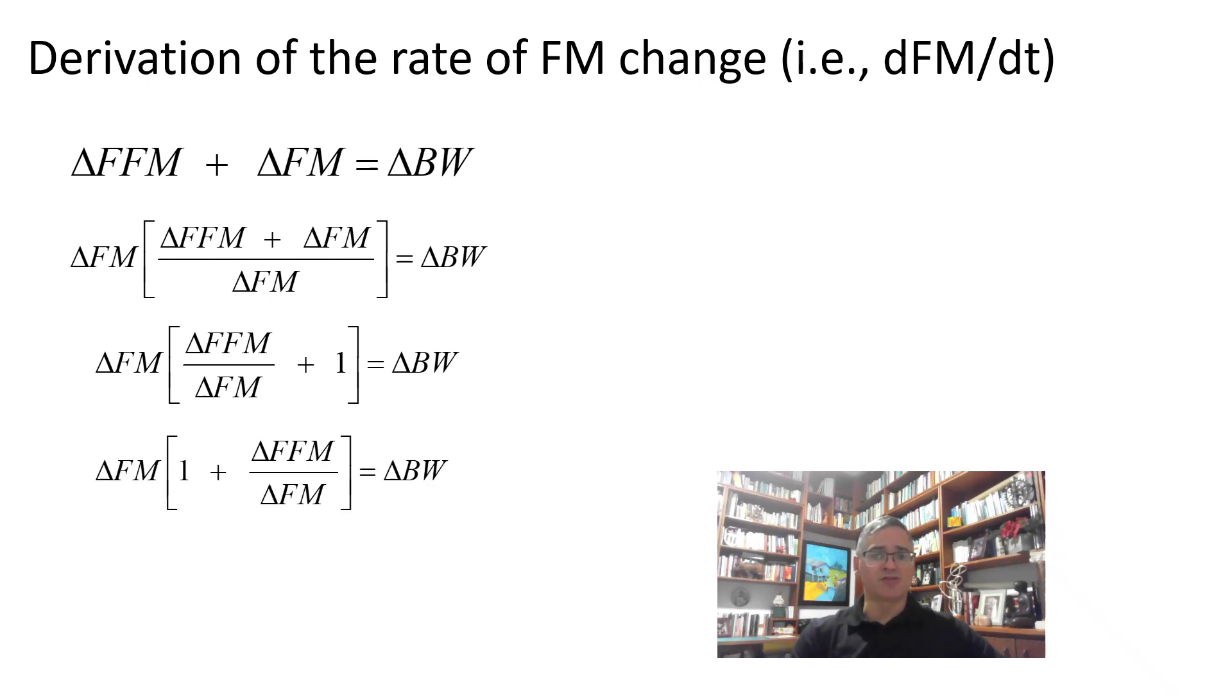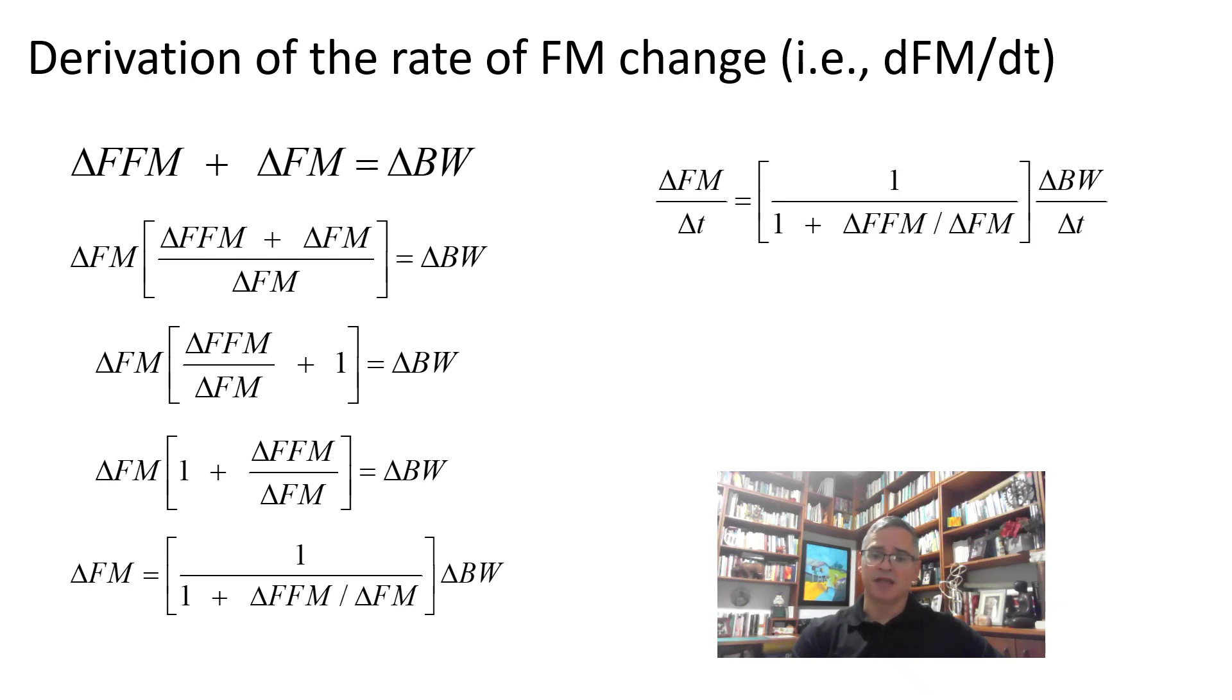Multiplying by the reciprocal of the expression within the square brackets yields. Dividing both sides of the equation by the change in time gives. Finally, as delta t approaches zero, we obtain the desired result.